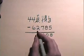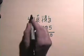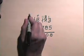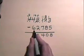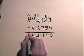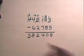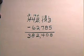11 subtract 7 is 4. 4 subtract 2 is 2. To subtract 6 from the 4, we borrow. This becomes 3 and this number becomes 14. 14 subtract 6 is 8. 3 is brought down and our result is 382,408.